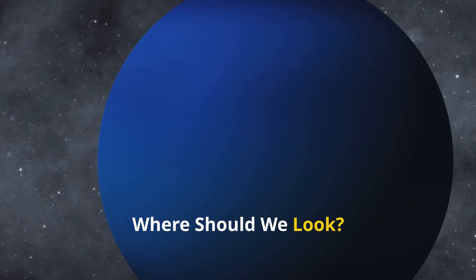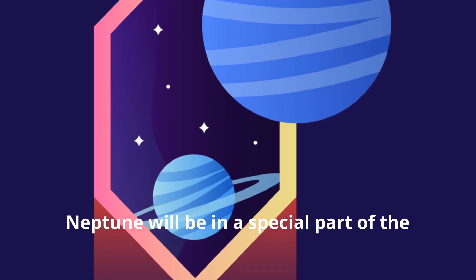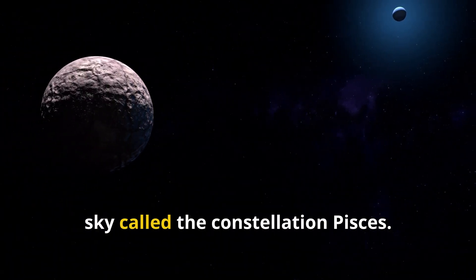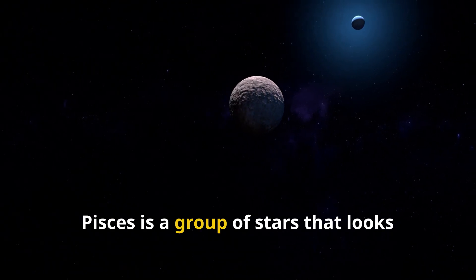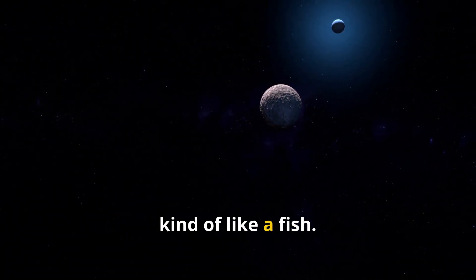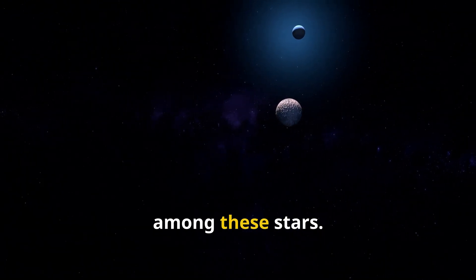Where should we look? On September 21st, Neptune will be in a special part of the sky called the constellation Pisces. Pisces is a group of stars that looks kind of like a fish. Neptune will be like a tiny blue dot among these stars.